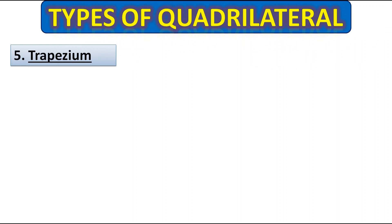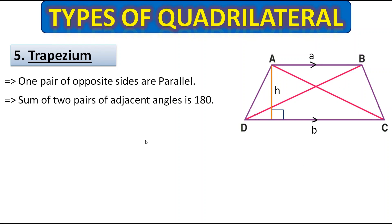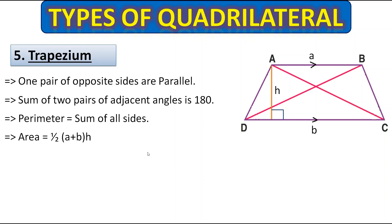Next type is the trapezium. The properties are: one pair of opposite sides are parallel — just one pair, the other pair is not. The sum of two pairs of adjacent angles is 180 degrees — this angle plus this angle equals 180 degrees, and similarly for the other pair. To find the perimeter, add up all the sides. To find the area, add the two parallel sides (a + b), multiply by the height, and then halve the result.